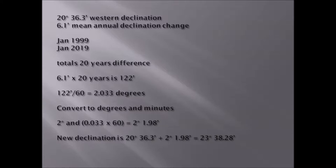Having read off the declination from the map as 20 degrees 36.3 minutes western declination, and having found that 6.1 minutes mean annual declination change occurs per year, and knowing that the map was created in January 1999 and it's now January 2019, we therefore know that the total number of years difference is 20 years. That means 6.1 minutes over a 20-year period change in declination is 122 minutes of change.